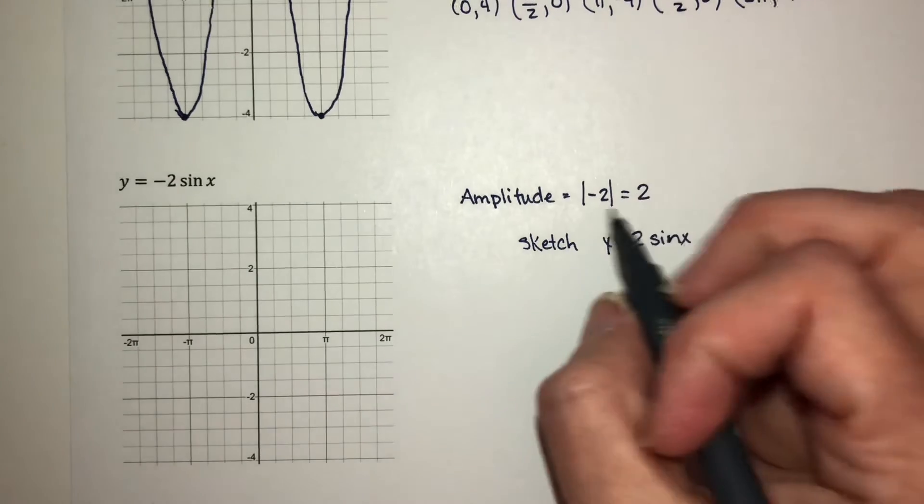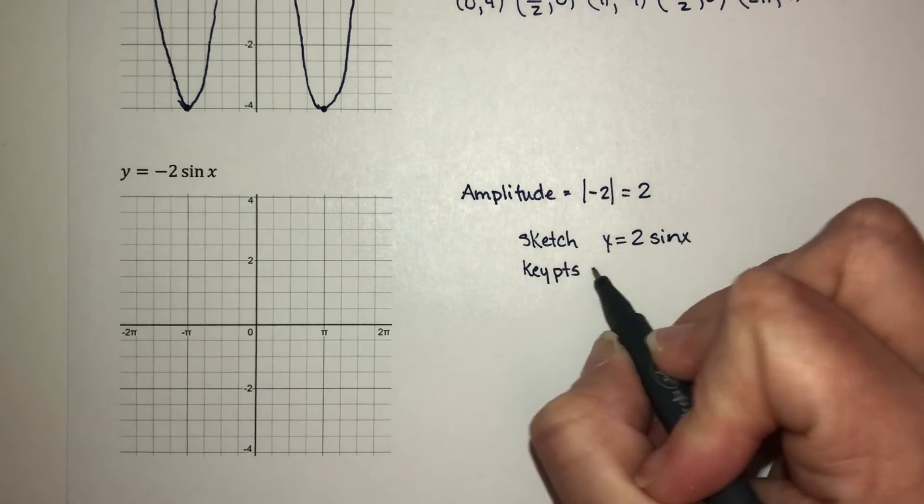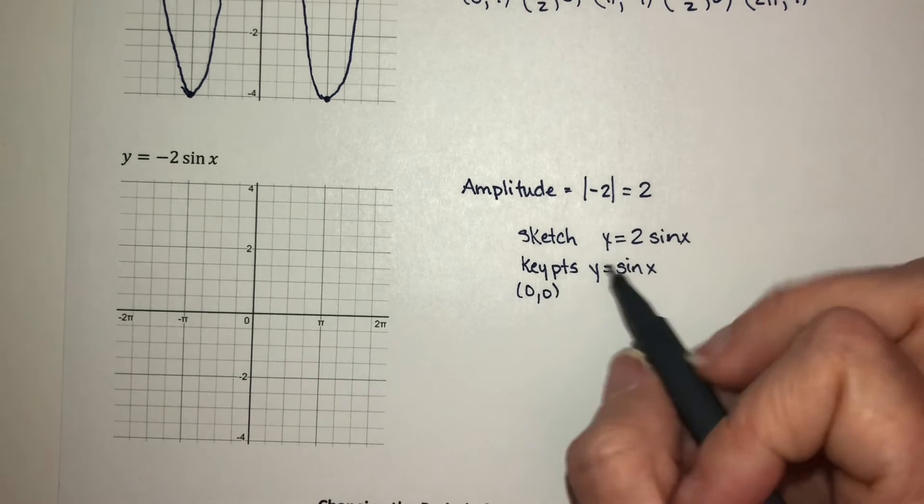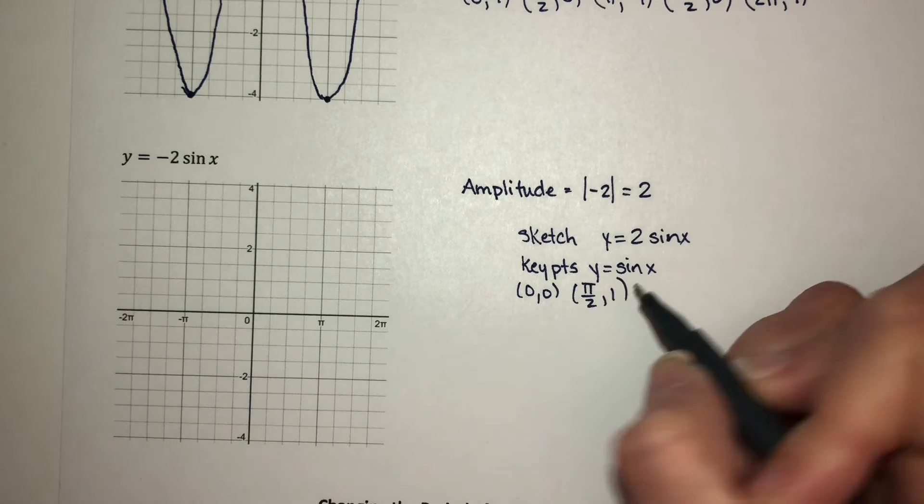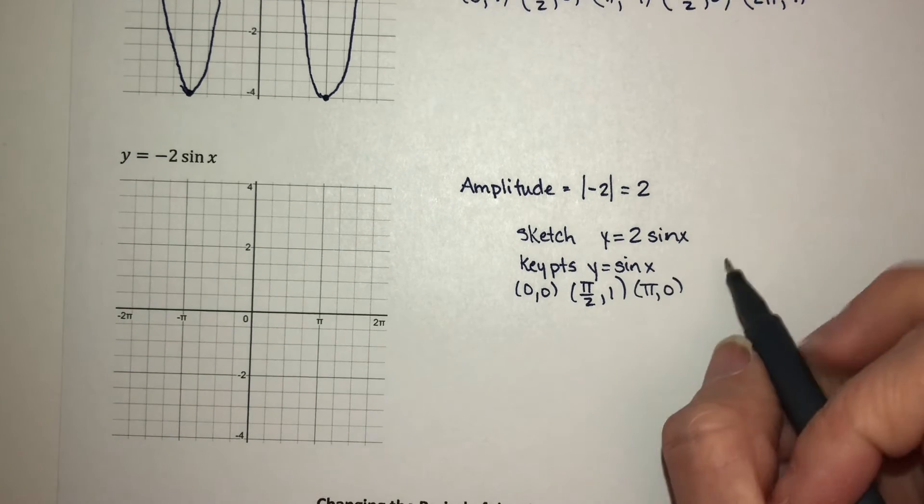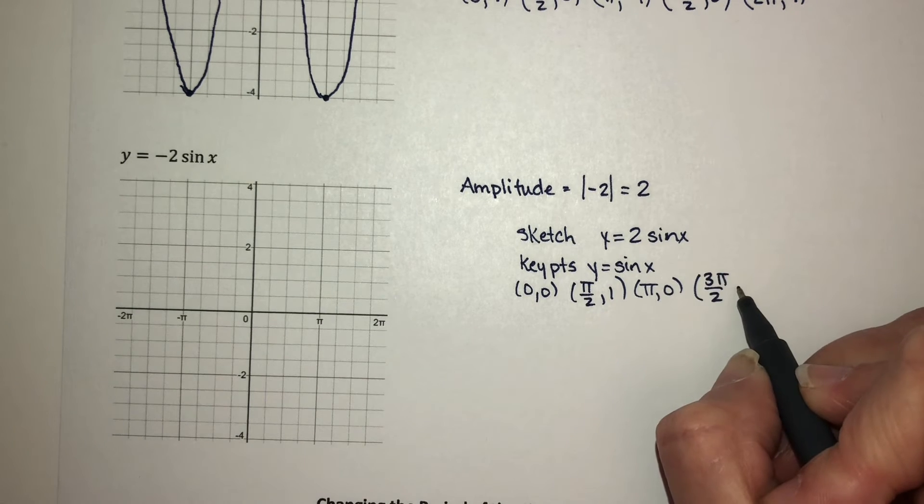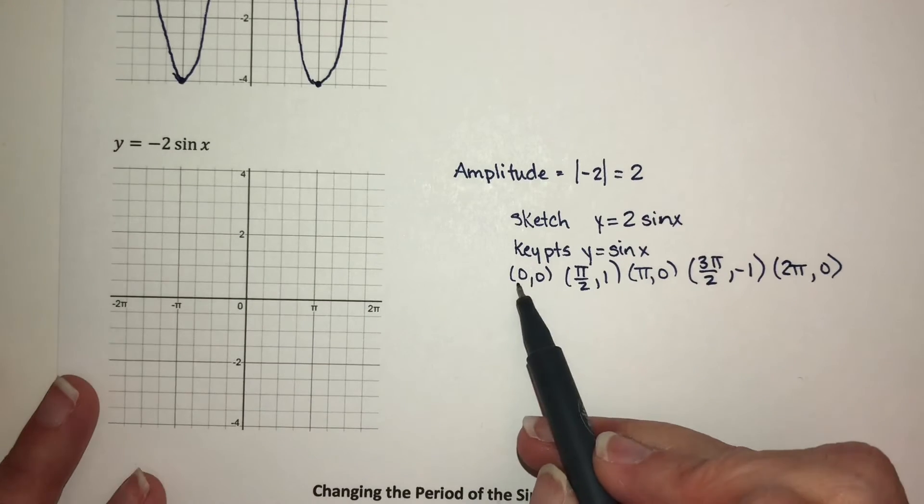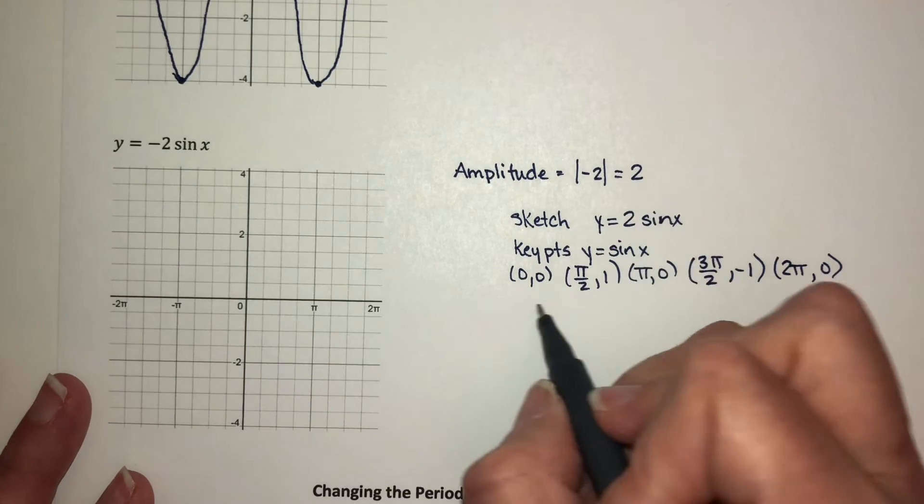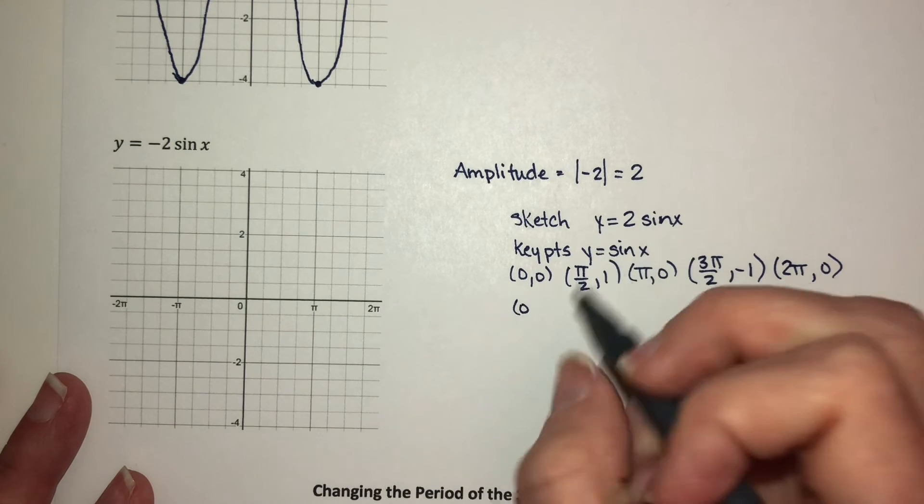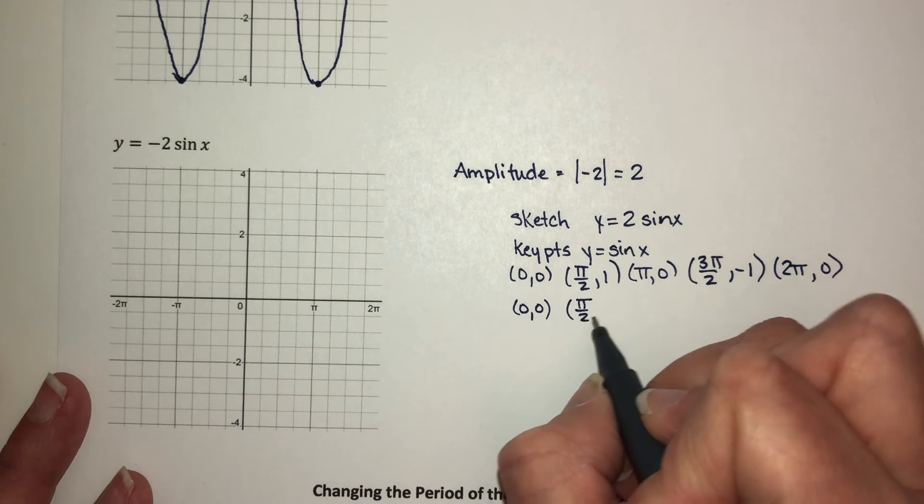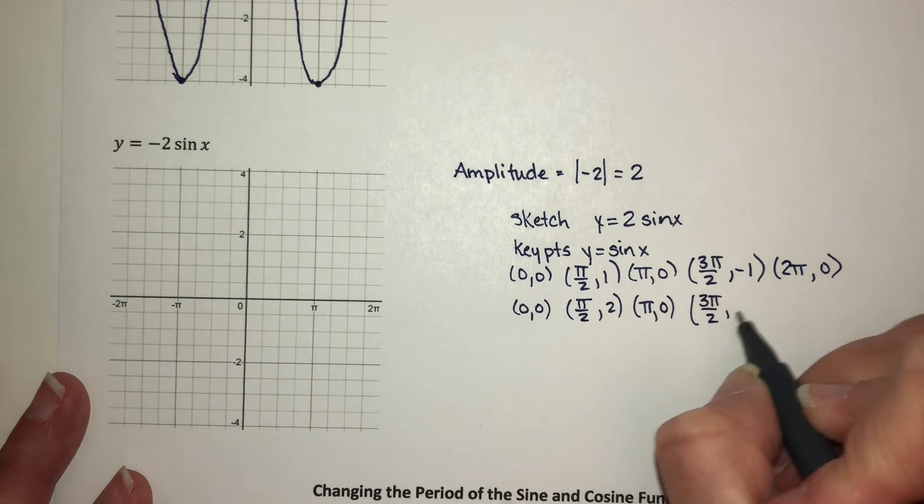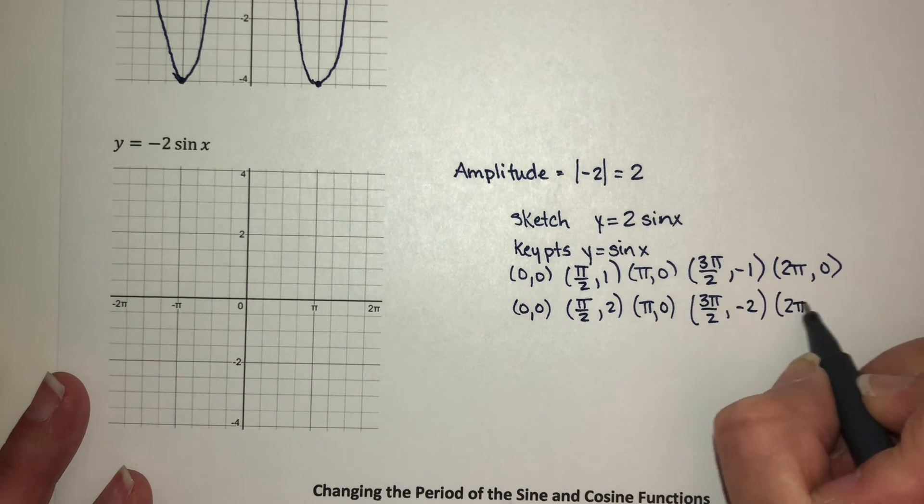My key points for sine x without the multiplier, those points are (0, 0), (π/2, 1), (π, 0), (3π/2, -1), and then (2π, 0). Let's multiply the y-coordinate of each of these by our amplitude, which is 2. So the points I would plot for y = positive 2 sin x are (0, 0), (π/2, 2), (π, 0), (3π/2, -2), and then (2π, 0).